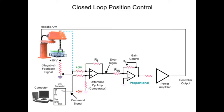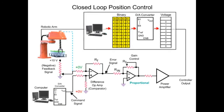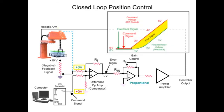To change the arm to another position, a command signal from the computer is required. The command signal consists of binary numbers that increment until a value is reached that represents the desired position. The binary value is then converted to an analog voltage by the digital to analog converter that indicates the position that the arm is required to move. In this system, there is not an immediate response by the robotic arm to the command signal. The delay of the arm and feedback signal creates a positive error signal voltage at the output of the difference op-amp.